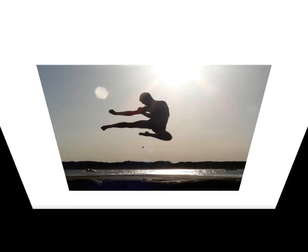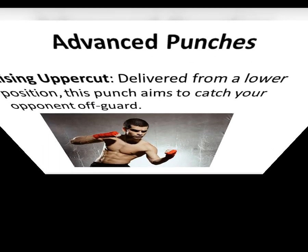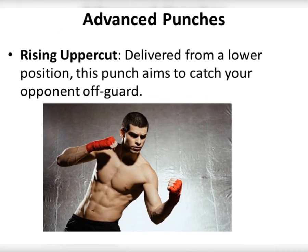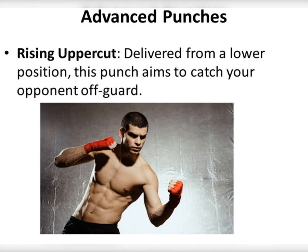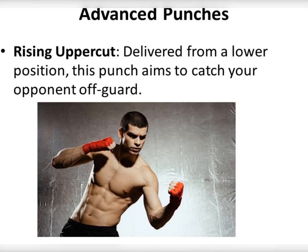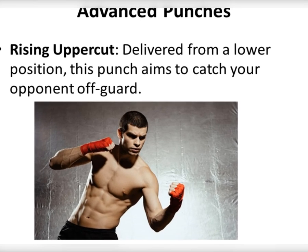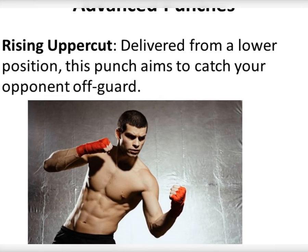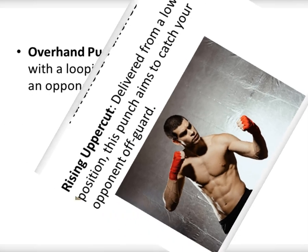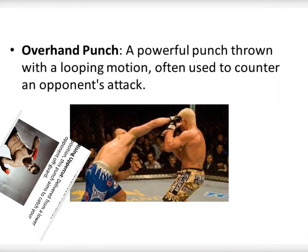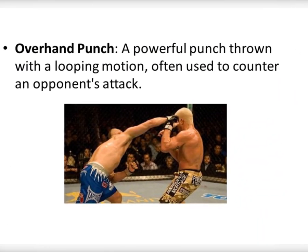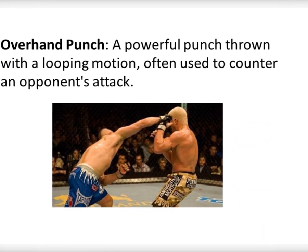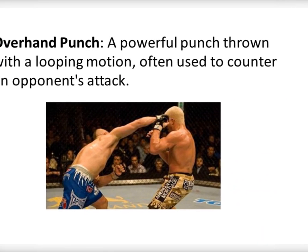Advanced Punches. Rising Uppercut: Delivered from a lower position, this punch aims to catch your opponent off-guard. Overhand Punch: A powerful punch thrown with a looping motion, often used to counter an opponent's attack.